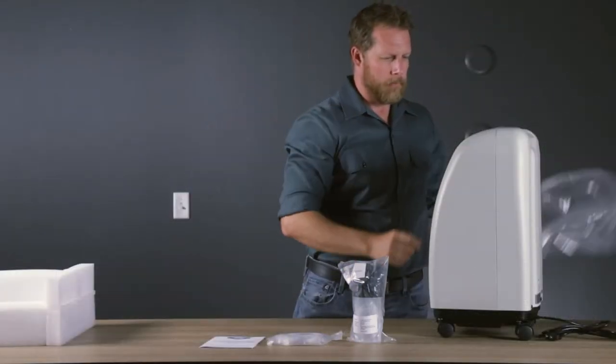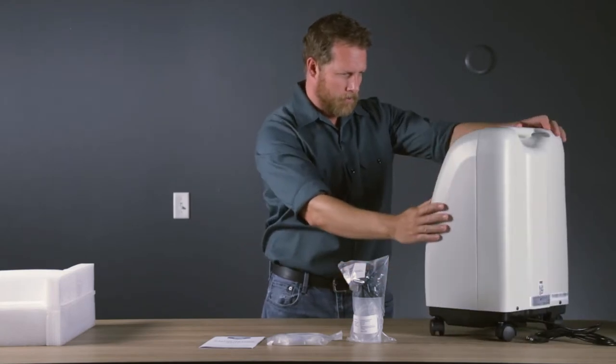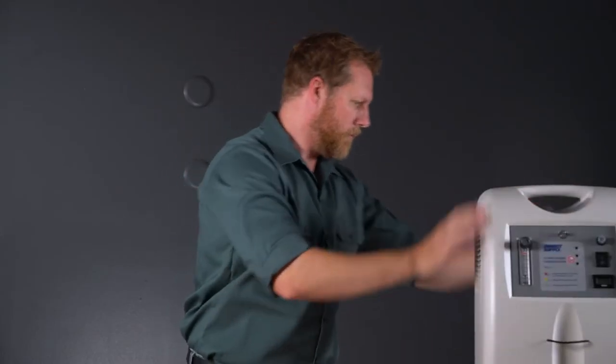Examine the exterior of the Oxygen Concentrator for nicks, dents, scratches or other damage. After inspection, plug the concentrator into a 120-volt grounded AC power source.